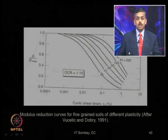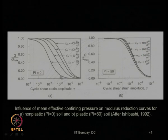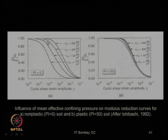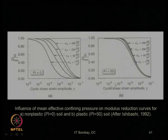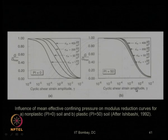Ishibashi (1992) showed that for non-plastic soils (P_I = 0), there is an effect of the mean effective stress σ'_m — an increase in σ'_m leads to an increase in the G/G_max ratio at a particular cyclic shear strain. For plastic soils with P_I = 50, he proposed that there is hardly any significant increase in G/G_max with increase in mean effective vertical stress.